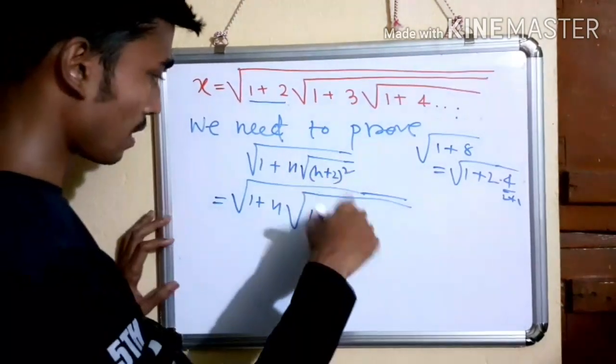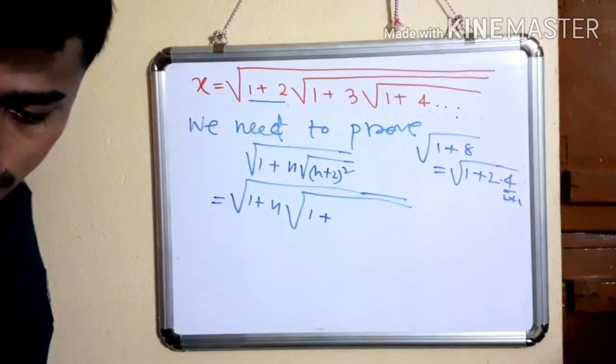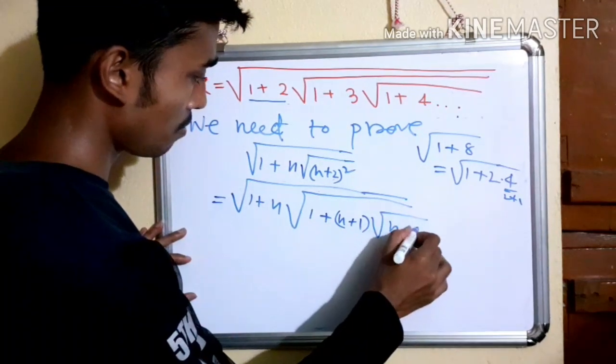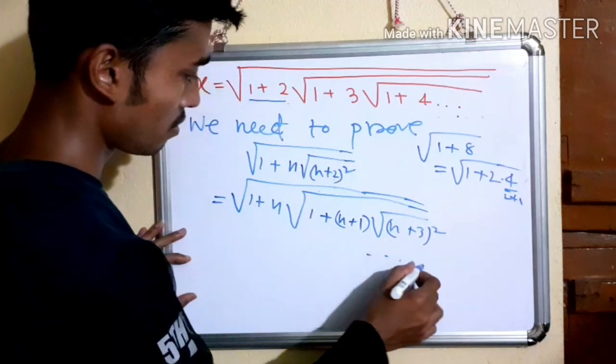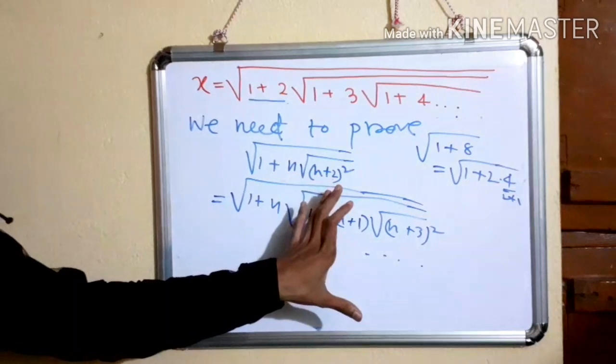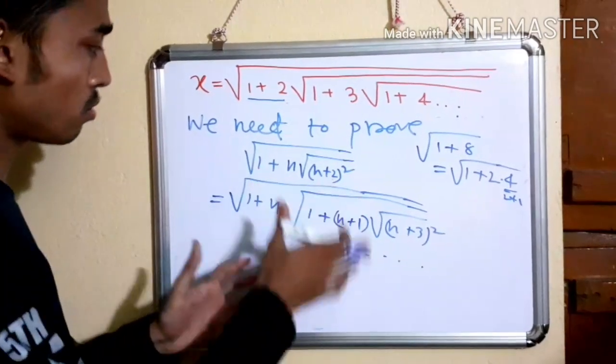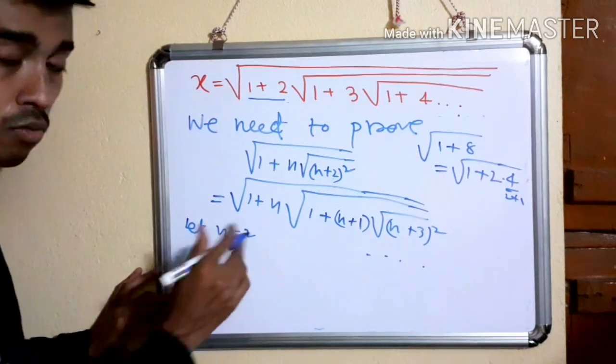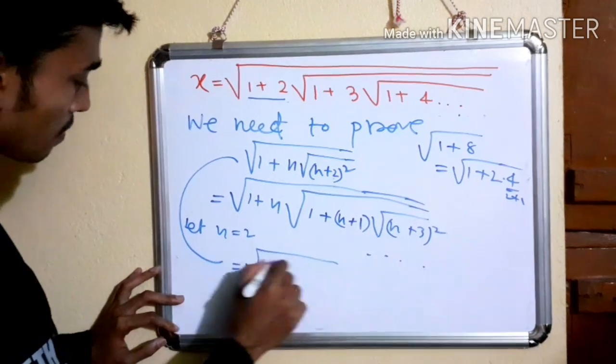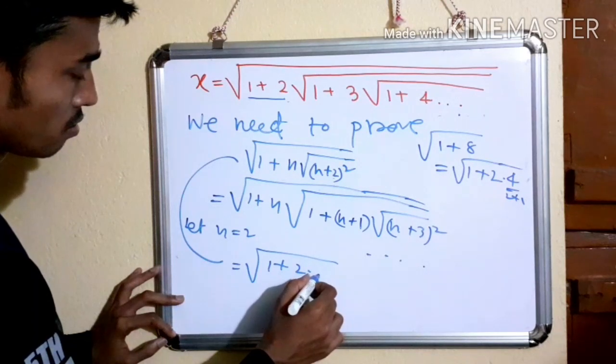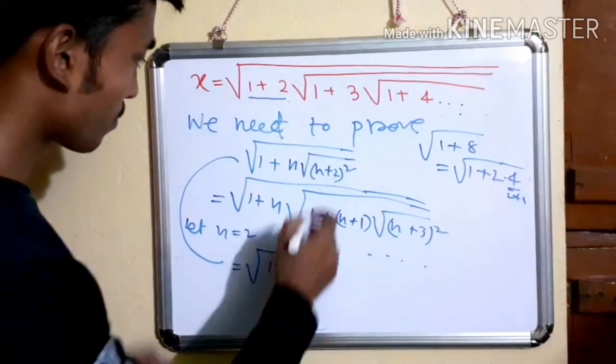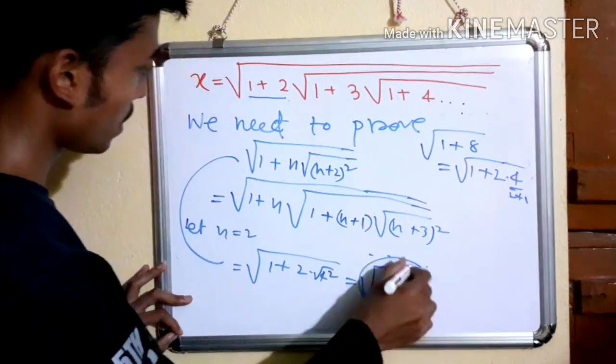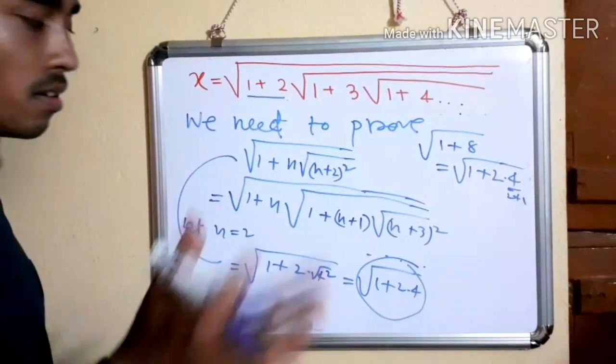Now again there should be some roots over it. So how can I put this? There should be some n plus 1 because it's the same n plus 1, and over this n plus 3. That's how it is. That's how the sequence goes on: here is n plus 2, here is n plus 3, and so on. Let's put the value of n is - n goes to 2, then what happens? 1 plus 2 into...